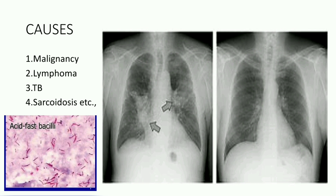The image in the lower left corner of the screen shows Ziehl-Neelsen staining of acid-fast bacilli. The bacilli can be seen as slender pink or red rods. The second image shows a chest roentgenogram of an individual with sarcoidosis who has bilateral hilar lymphadenopathy, which comes under skating grade 1.